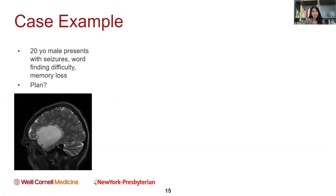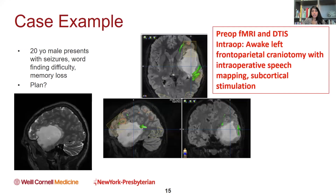This is a 20-year-old male who presented with seizures and word-finding difficulty. We planned this with preoperative fMRI as well as DTI, and we did an awake frontoparietal craniotomy with intraoperative speech mapping and subcortical stimulation to remove the tumor.